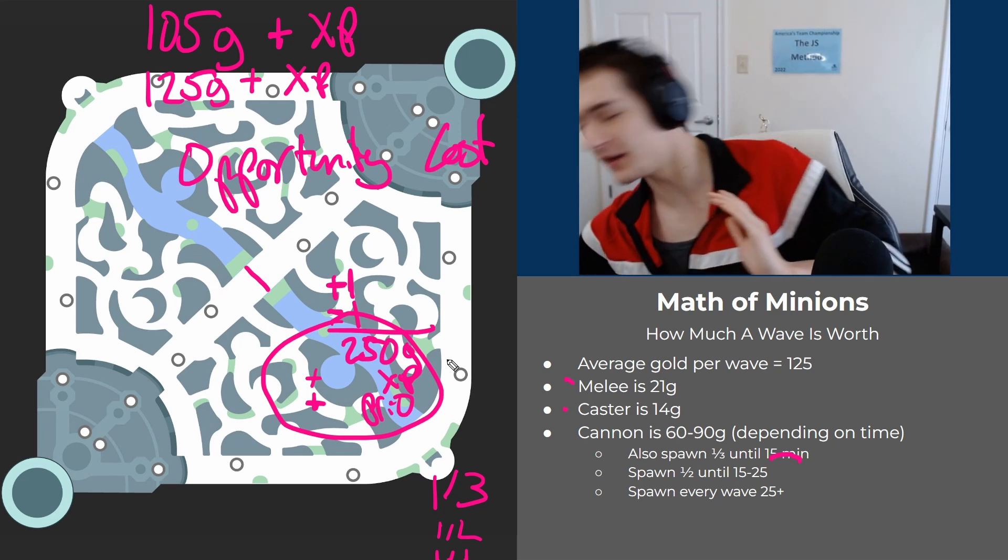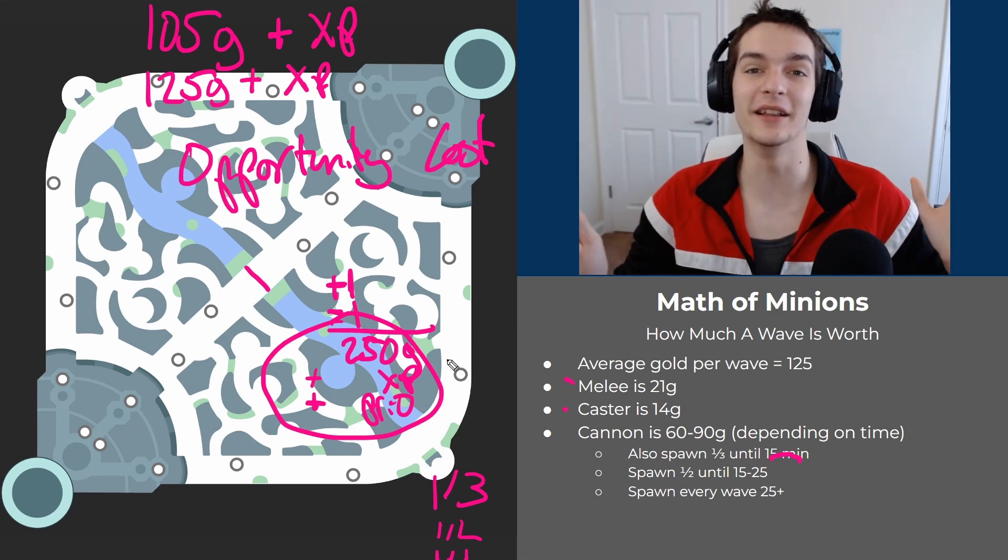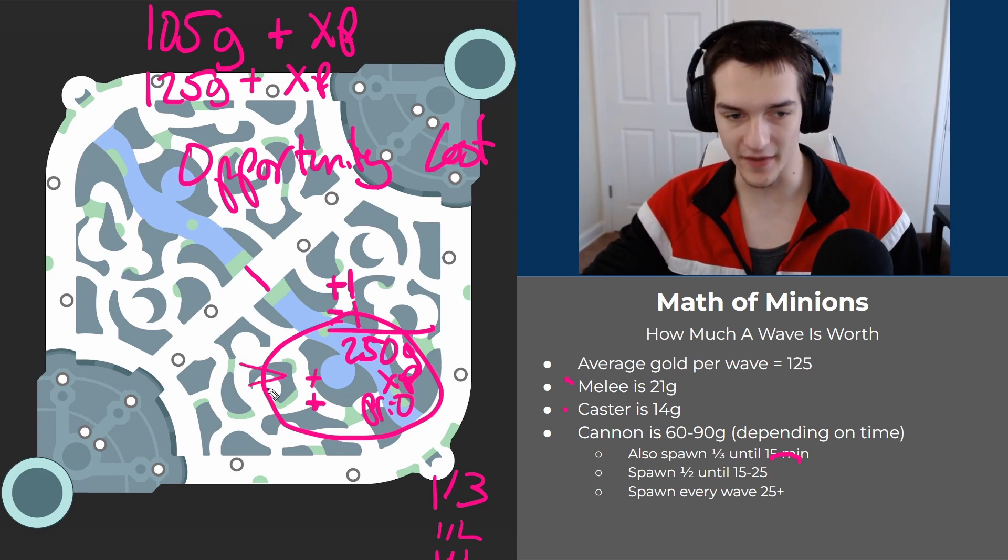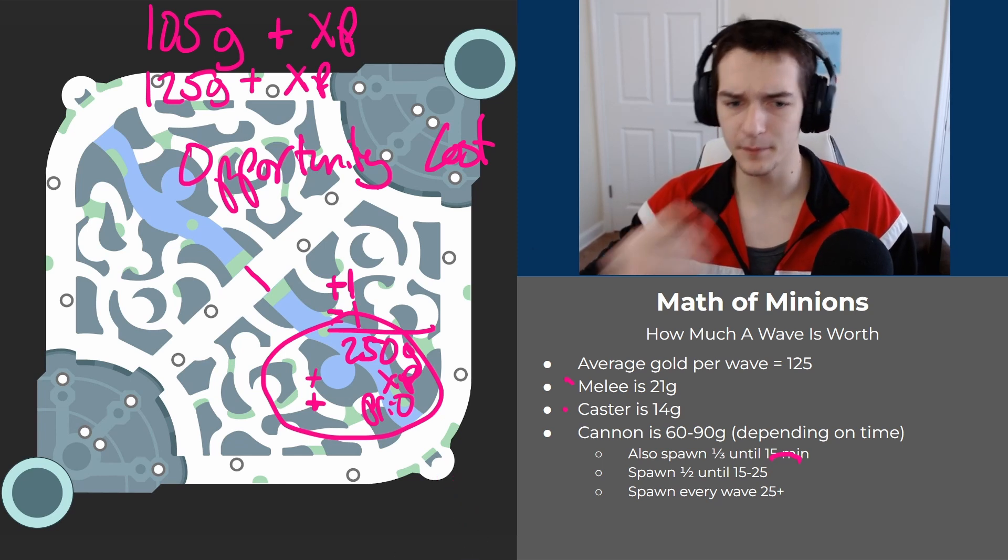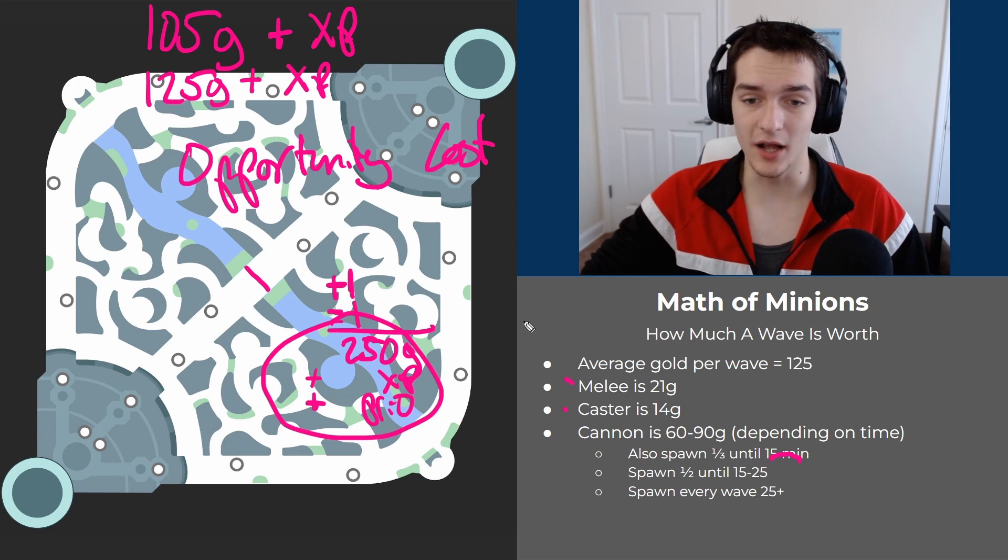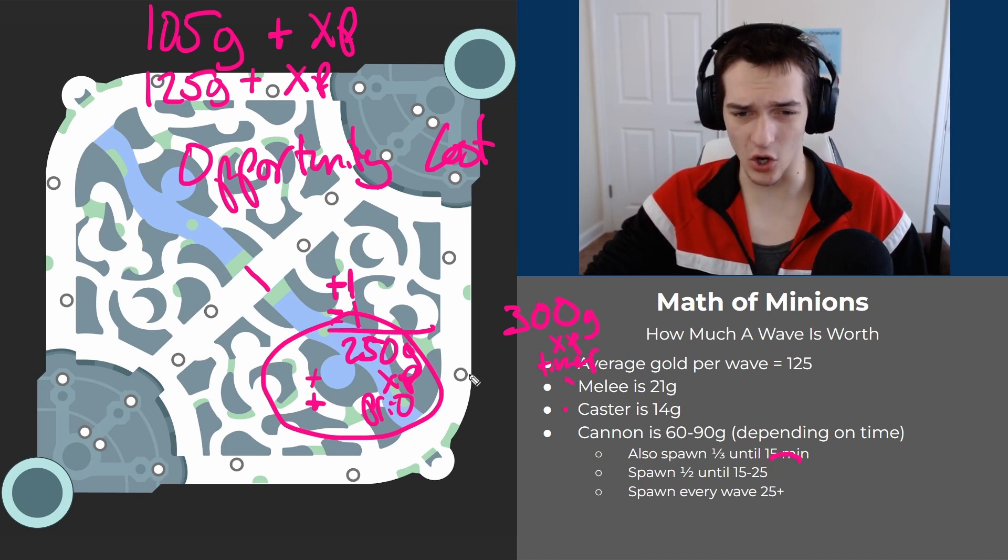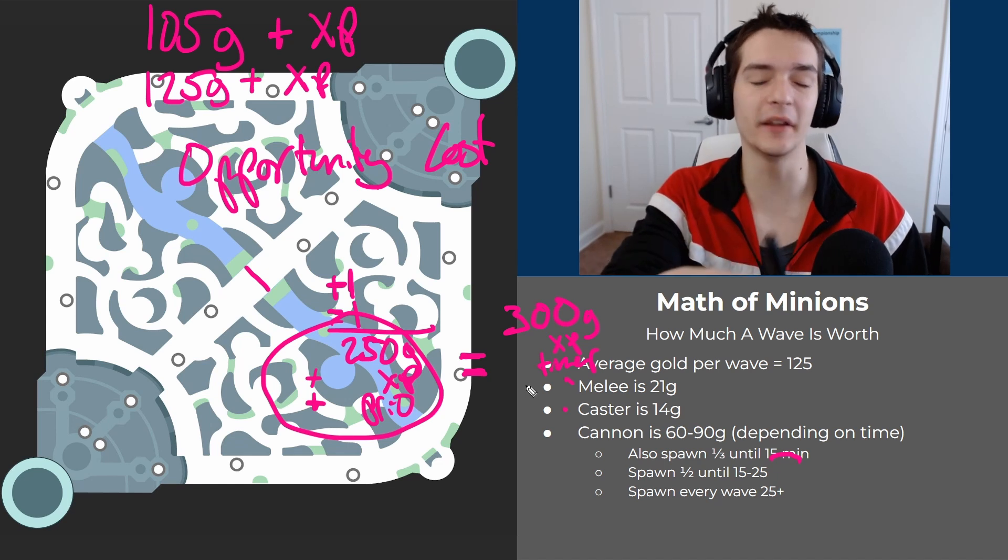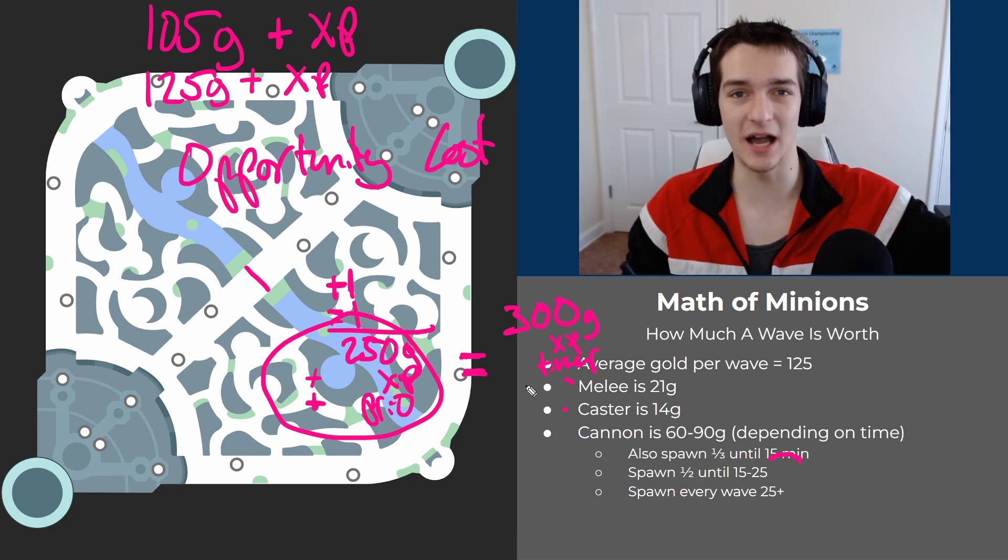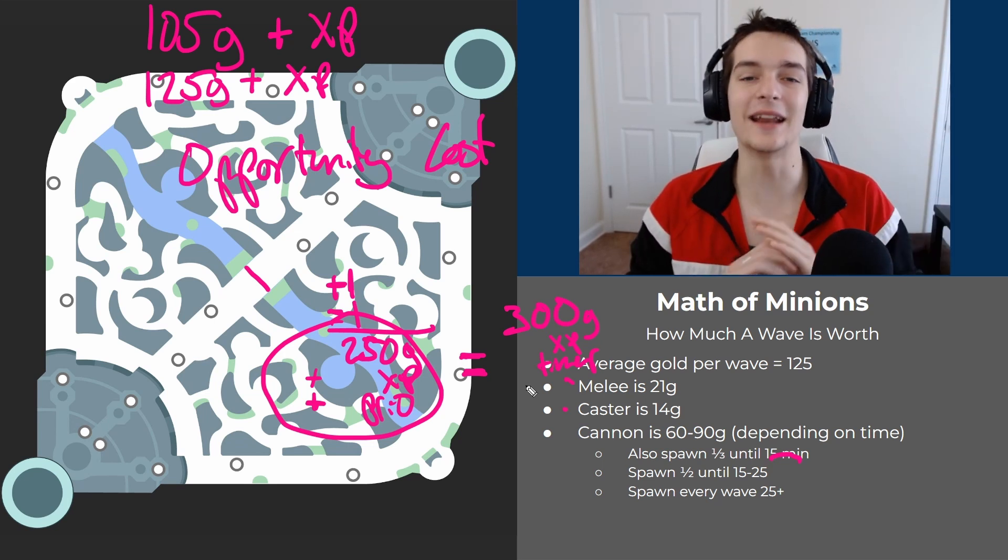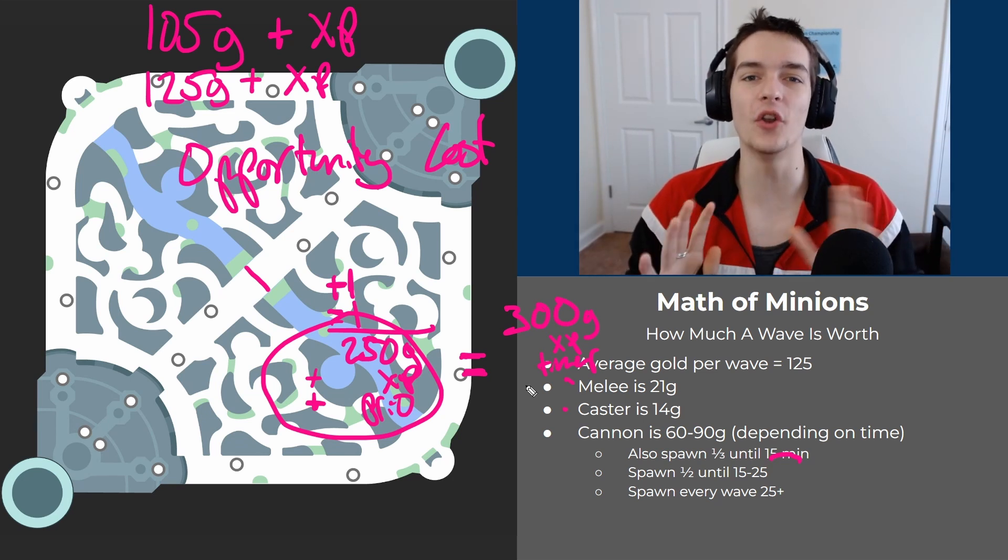If you want to roam, you have to get more than this more than half the time for that roam to make sense. A kill is worth 300 gold and a very small amount of XP plus the death timer. Taking into account the priority and XP, these are roughly equivalent. That means if there's a wave in mid lane and you want to roam bottom, you have to get more than a kill more than half the time or that roam is not worth it. That is the opportunity cost of a wave - a very fundamental roam idea.